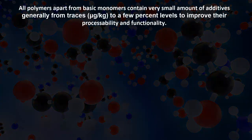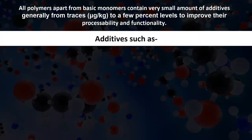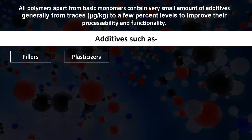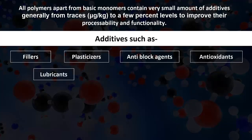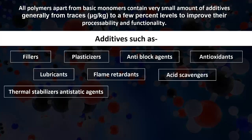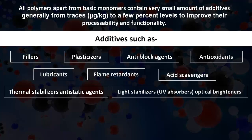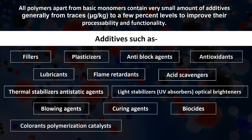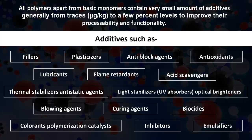All polymers, apart from basic monomers, contain a very small amount of additives — generally from trace levels (micrograms per kg) to a few percent — to improve their processability and functionality. Additives such as fillers, plasticizers, anti-block agents, antioxidants, lubricants, flame retardants, acid scavengers, thermal stabilizers, anti-static agents, light stabilizers, UV absorbers, optical brighteners, blowing agents, curing agents, biocides, colorants, polymerization catalysts, inhibitors, and emulsifiers are used depending upon the type of plastic used for packaging.